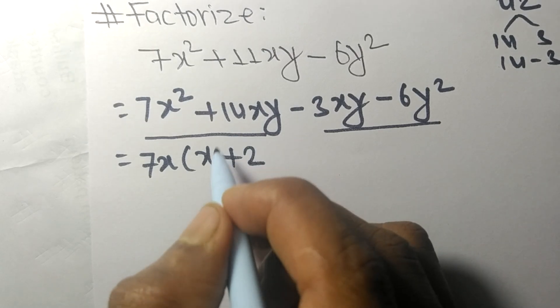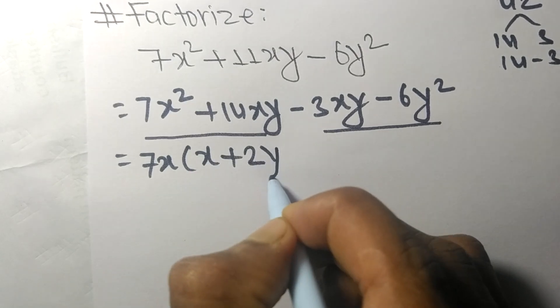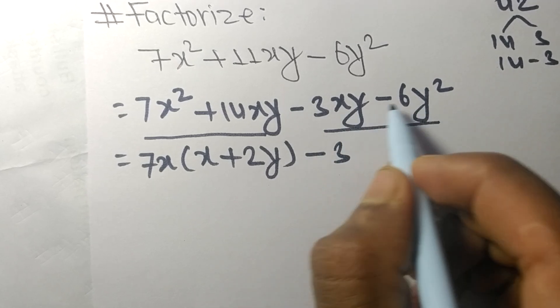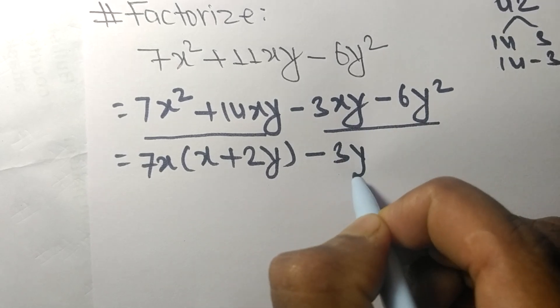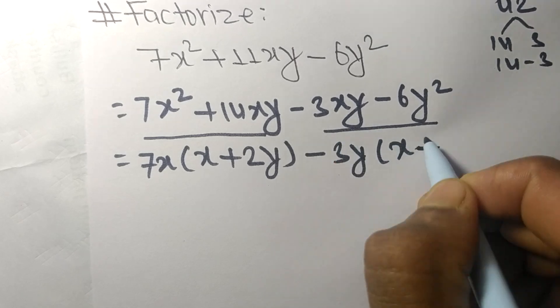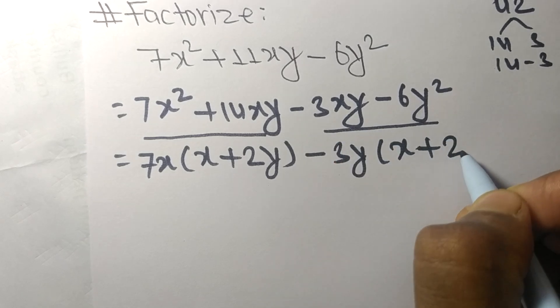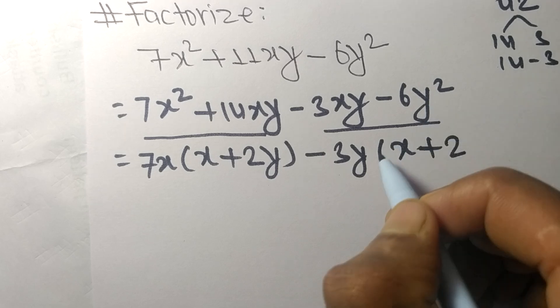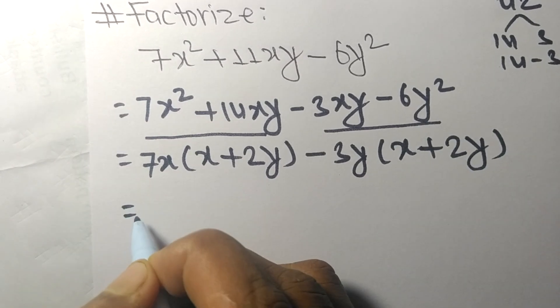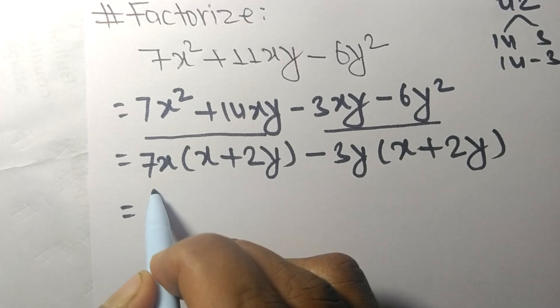In the last pair, the common is -3y, so the remaining is x + 2y. Now we again find the common factor in these expressions.